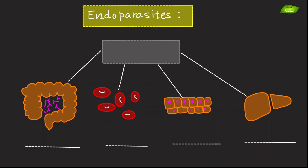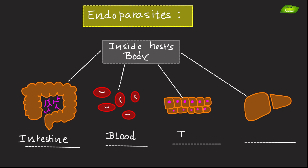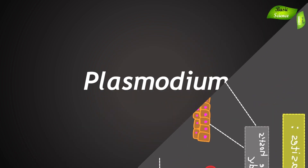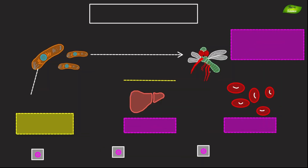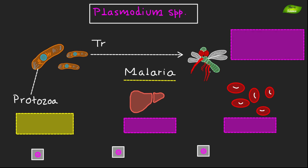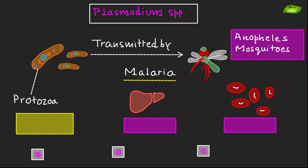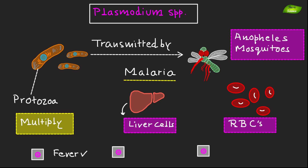Endoparasites live inside the host body, such as in the intestine, blood, tissues, or different organs. For example, Plasmodium species are protozoa that cause malaria, transmitted by Anopheles mosquitoes. They multiply in liver cells and red blood cells, causing cycles of fever, chills, and anemia.